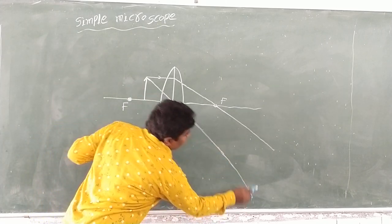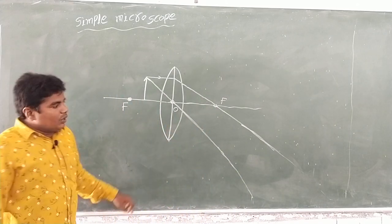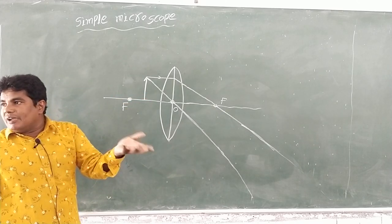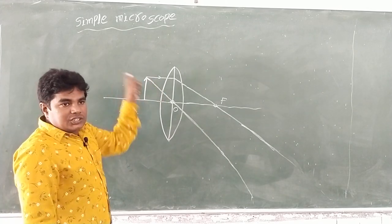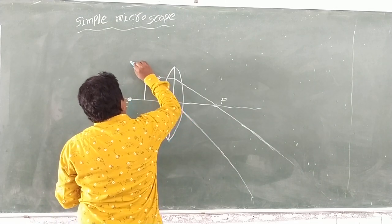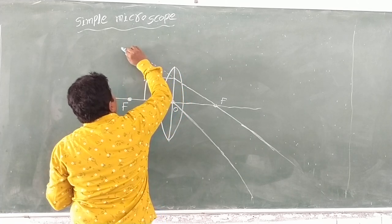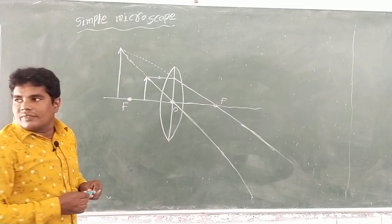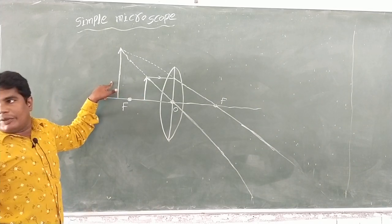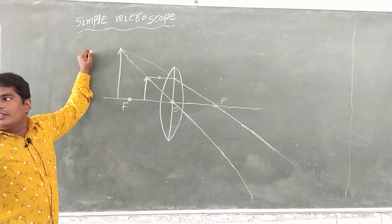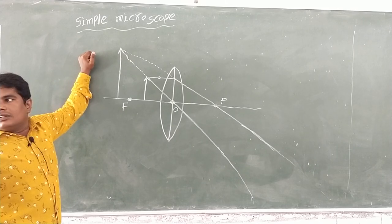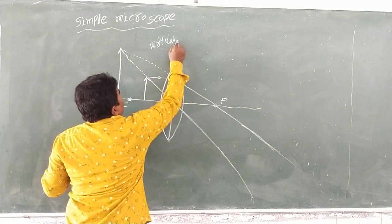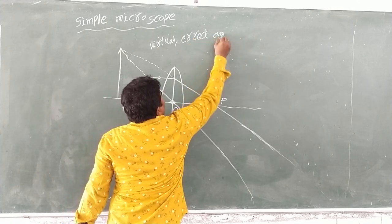These are diverging light rays. The diverging light rays, when extended in the backward direction, intersect at a point. That intersection point is where the image is formed. This image is called a virtual, erect, and magnified image.